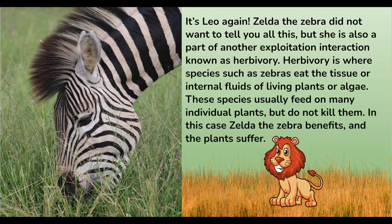It's Leo again. Zelda the zebra did not want to tell you this, but she's also part of another exploitation interaction known as herbivory. Herbivory is where species such as zebras eat the tissue or internal fluids of living plants or algae. These species usually feed on many individual plants, but do not kill them. In this case, Zelda the zebra benefits and the plants suffer.